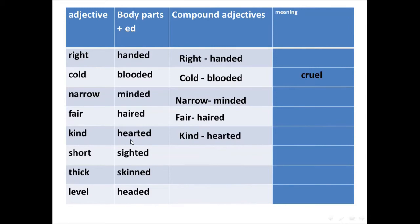Short-sighted, the person who can't see long distances. Thick-skinned, this means not sensitive, the person who is not affected by criticism. Level-headed, this means sensible, the person who makes good decisions.